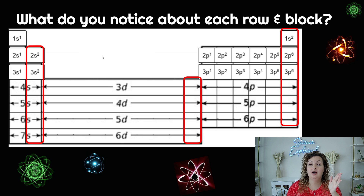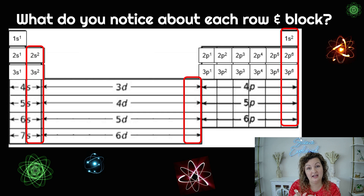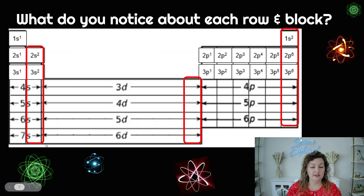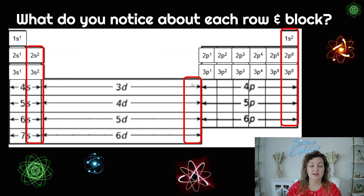Every time you leave a block you have to write down the electron configuration of that block, and then when you reach the next endpoint you're gonna write that electron configuration down. So if I'm going through the S's, this is where I leave the S block first right here — so that's an endpoint if that's all you have. Here is another endpoint for the S's and all the way down. If I'm leaving my P blocks, all of these are gonna be the endpoint for my P blocks. And if I'm leaving my D blocks, all of these are the endpoints of my D blocks.